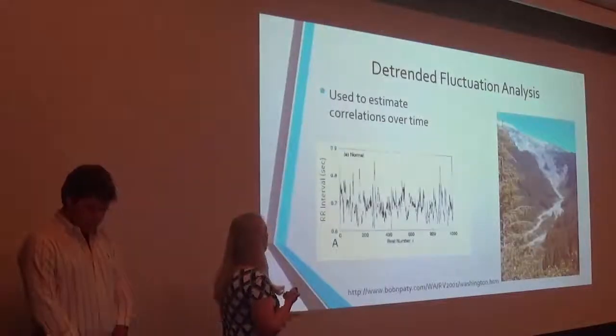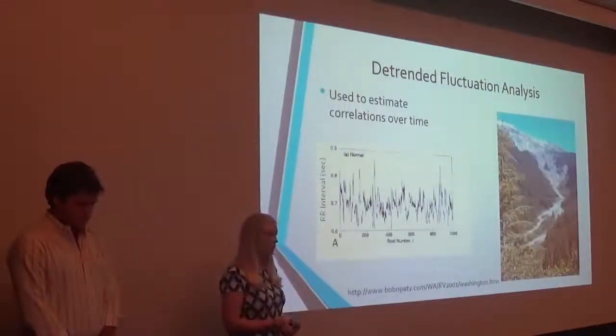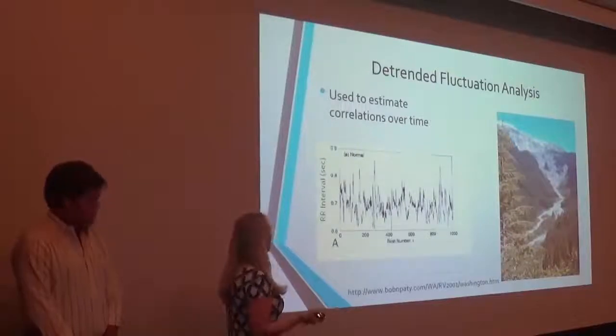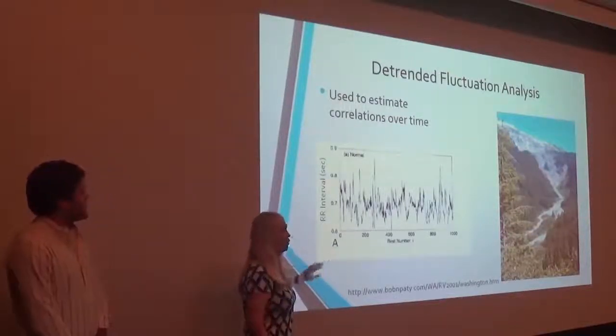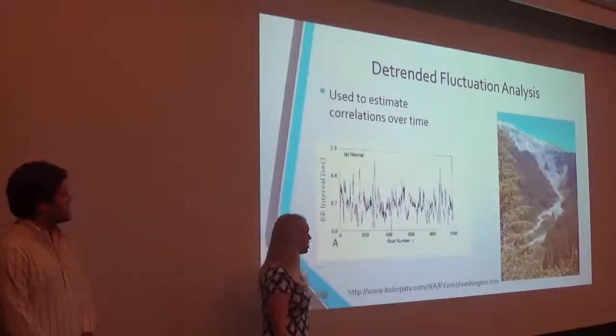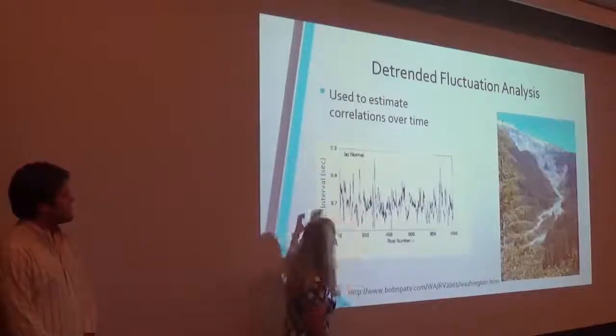So keeping that in mind, what we studied was called detrended fluctuation analysis, which is used to estimate correlations over time. So if you look here, this is a different graph from what you'd seen before with the time of the voltage. This is the heartbeat number and the length of that heartbeat.